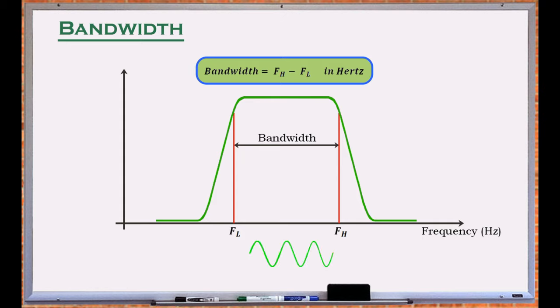Ideally, a signal with a frequency that lies in the specified range passes through the medium without a significant amount of amplitude reduction. On the other hand, frequencies outside the bandwidth range experience an amplitude loss.